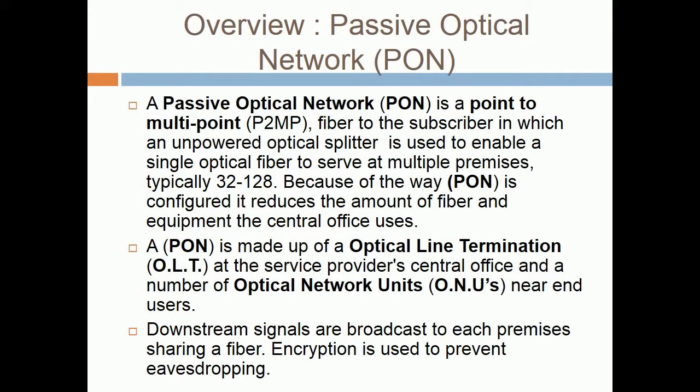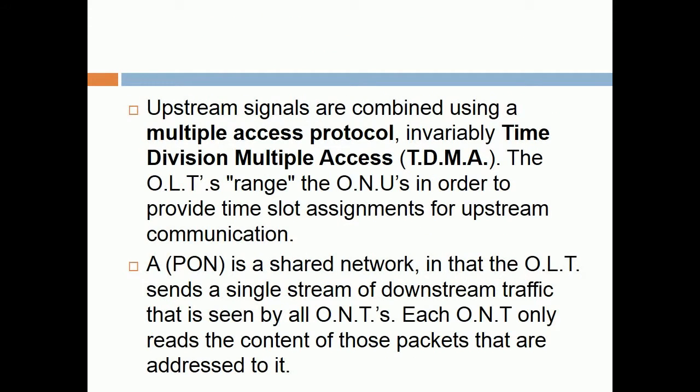Downstream signals are broadcast to each premises sharing the fiber. Encryption is used to prevent eavesdropping. Upstream signals are combined using a multiple-access protocol, invariably time-division multiple-access. The OLTs range the ONUs in order to provide time-slot assignments for upstream communication.